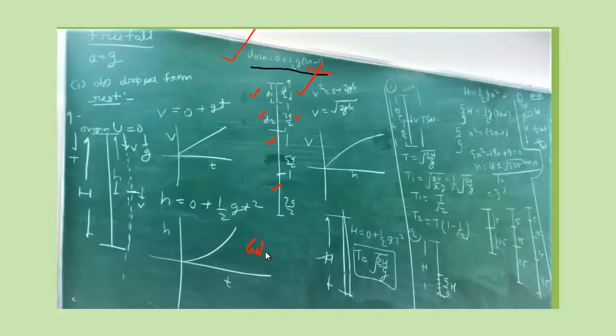Galileo's law of odd numbers for free fall. This condition is uniform acceleration from rest and we are talking about consecutive equal time intervals. Since we are talking about free fall drop from rest satisfying this condition, we can apply Galileo's law. In free fall drop from rest, the object moves in the ratio 1 is to 3 is to 5 is to 7.